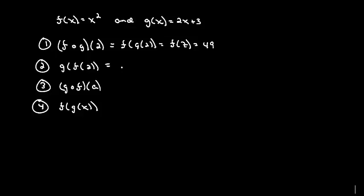So let's look at this one. This is g at f of 2. So this is g of, now f at 2 is 4, and g at 4 is 2 times 4, which is 8, plus 3, which gives me 11. So notice that f of g of 2 and g of f of 2 are not the same.